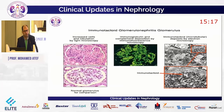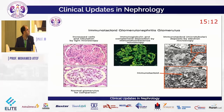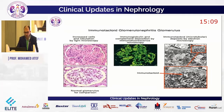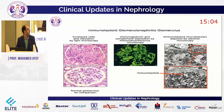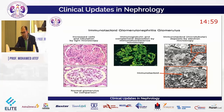Here is a picture of a kidney biopsy of immunotactoid glomerulonephritis. Light microscopy shows lobulation and increased hypercellularity. On immunofluorescence, there is complement and immunoglobulin deposition. And on electron microscopy, the deposition of microtubules is clearly demonstrated.